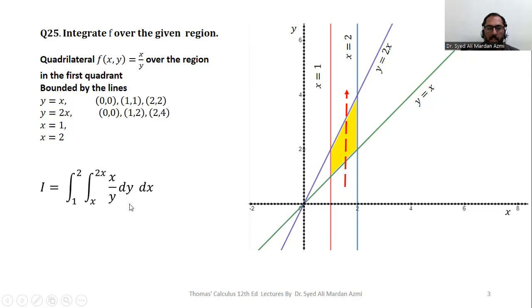Whenever y is your inner variable, you will pass an arrow from your region from bottom to top. So the boundary through which this arrow enters will provide you the lower limit and the boundary through which this arrow exits will provide you the upper limit. So here we have the limits of y as x to 2x.